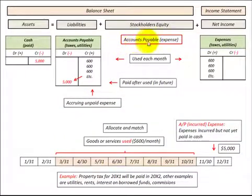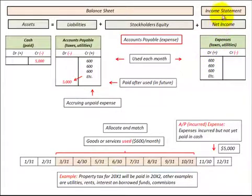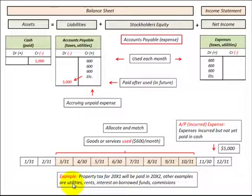In this presentation we're going to look at accounts payable as an expense. We have our accounts payable account, which is a liability on the balance sheet, and then the expense account, which is part of net income on the income statement. So exactly what is accounts payable? Here's an example: a property tax for 20x1 that will be paid in 20x2. Other examples could be utilities, rents, interest, and borrowed funds.